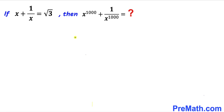Welcome to pre-math. In this video we have been given this interesting Olympiad math problem. If x plus 1 divided by x equals square root of 3, we are going to find the value of x to the power 1000 plus 1 divided by x to the power 1000.